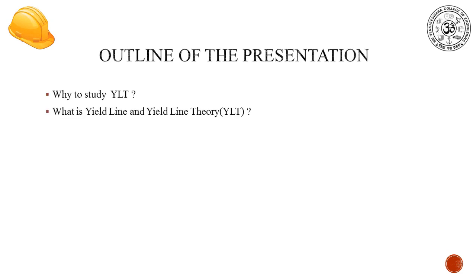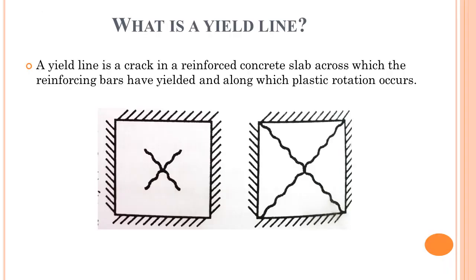Outline of the presentation includes why to study Yield Line Theory, what is a yield line, and what exactly this Yield Line Theory talks about. This Yield Line Theory is an ultimate load analysis method used for RCC slab or plate. This Yield Line Theory is useful to find the ultimate moment or collapse load in the structure.